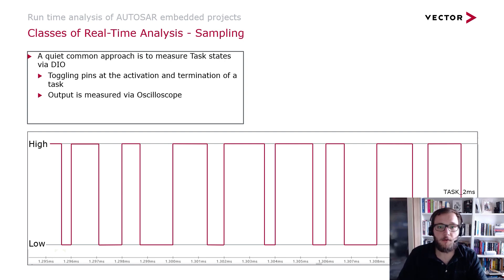So let's go ahead and start with the general understanding of sampling. A quite common approach to do sampling is to do pin toggling with the activation and the termination of a task.